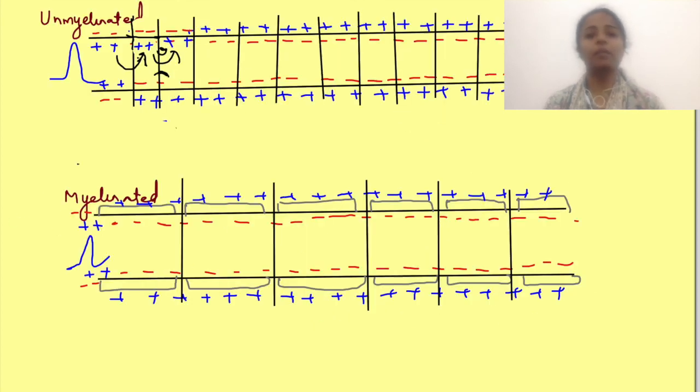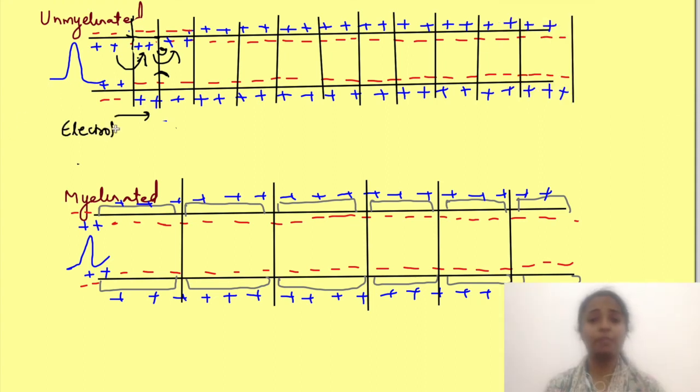In summary in non-myelinated neuron the action potential spreads by electrotonic conduction which in turn leads to action potential regeneration at very closely spaced points. Otherwise the potential loss will be too much over the length of axon and hence this strategy of action potential regeneration works in non-myelinated neuron.